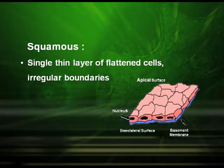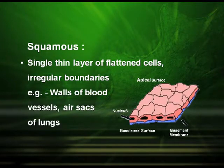Squamous epithelial tissues are a single thin layer of flattened cells, and their boundaries are irregular — they do not have a smooth boundary wall. Examples include the wall of blood vessels and the air sacs of the lungs.